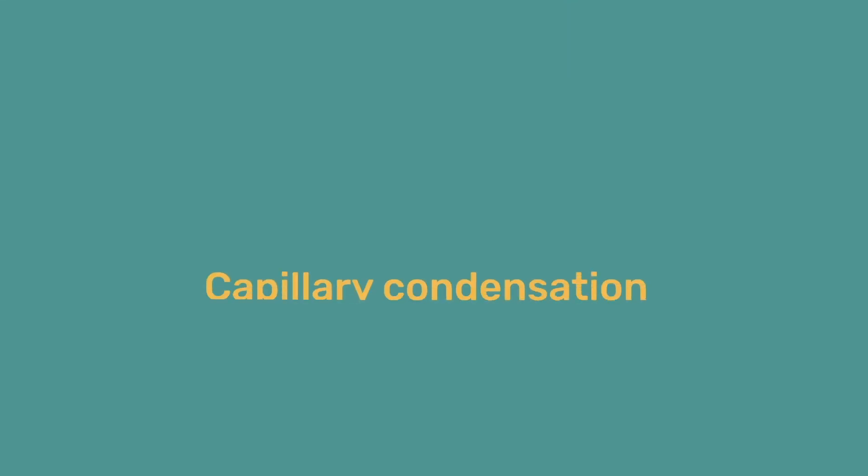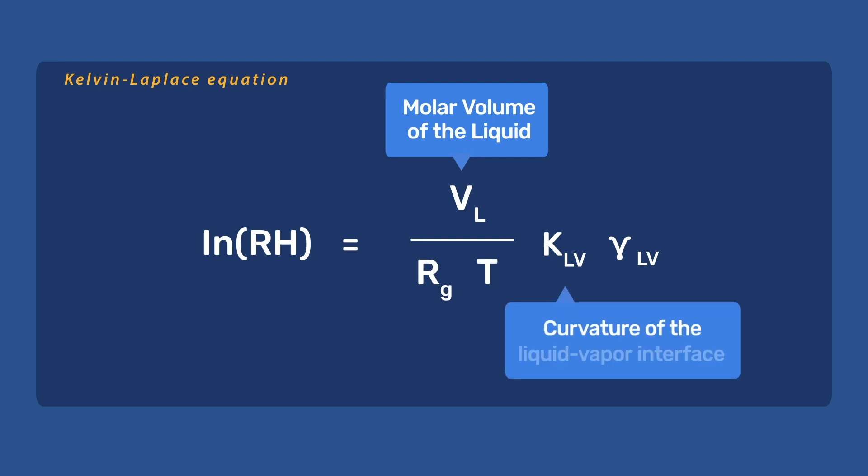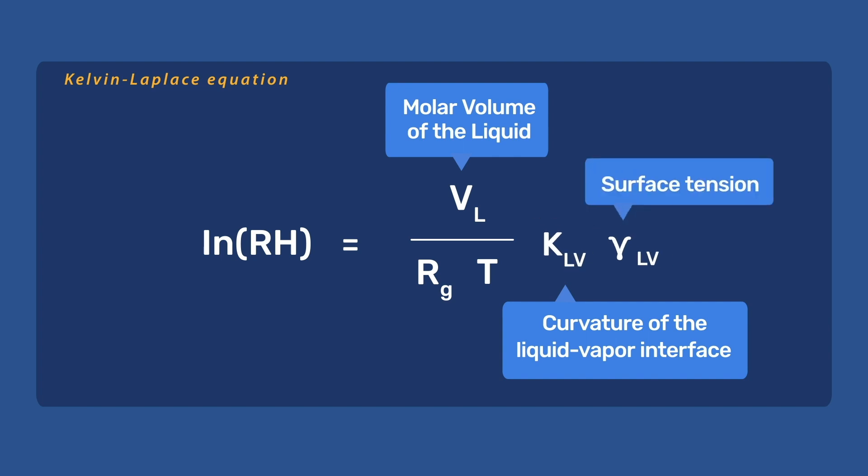The humidity at which capillary condensation takes place depends on the pore size and can be obtained from the Kelvin-Laplace equation. This states that the natural log of relative humidity is equal to the molar volume of the liquid, divided by RT, multiplied by the curvature of the liquid-vapor interface, kappa LV, and the surface tension, gamma LV.